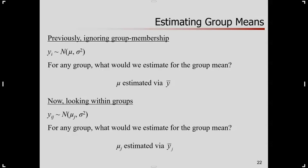So for a particular group, what would I estimate for the group mean? Well, now I have a group-specific parameter, mu sub j. Each group is allowed to have their own different mean, and I would estimate that from sample data based on the mean of the scores in the sample in group j.